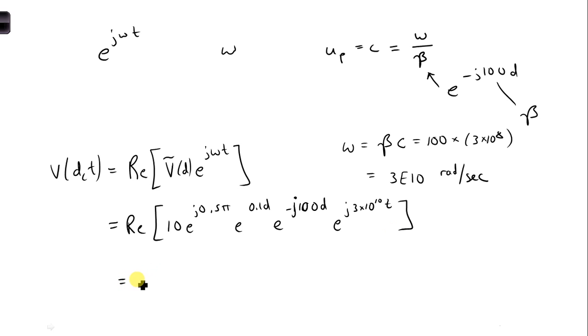Now we're going to use Euler's identity. And I'm going to pull this out, so we get 10. And this term, which is also part of the amplitude, 0.1d. So there's no j terms here. So those go with the amplitude. And everything relating to the phase, which are the j terms, goes in our cosine. So we have cosine 3 times 10 to the 10th t minus 100d and plus 0.5 pi.